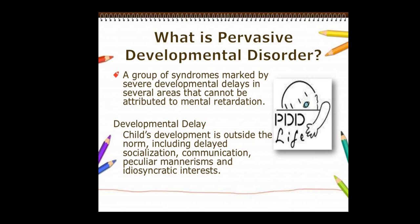Pervasive developmental disorder is a group of syndromes marked by severe developmental delays in several areas that cannot be attributed to mental retardation. It is not mental retardation. The child's development is outside the norm, including delay in socialization, communication, peculiar mannerisms, and idiosyncratic interests.